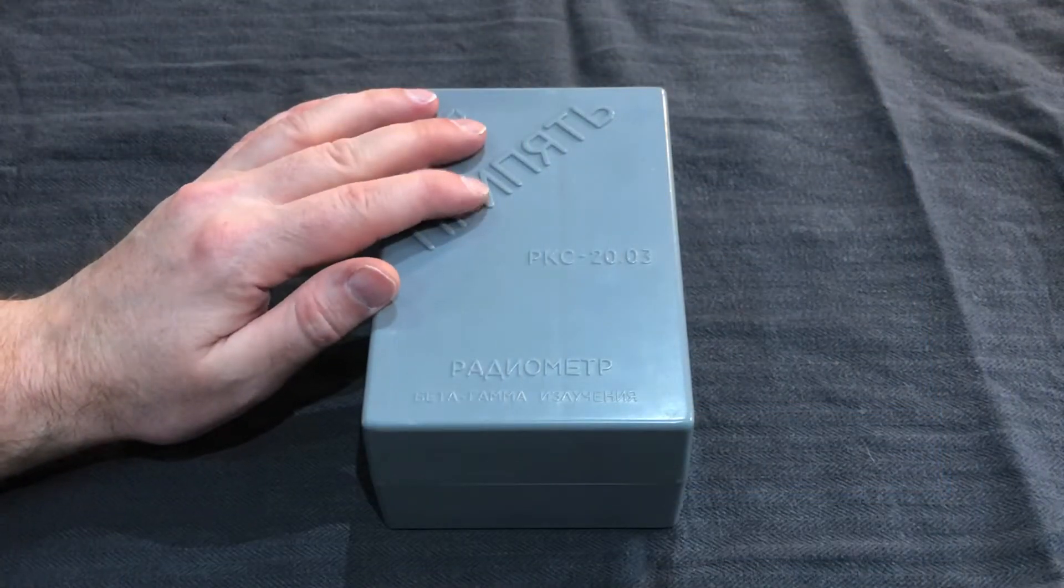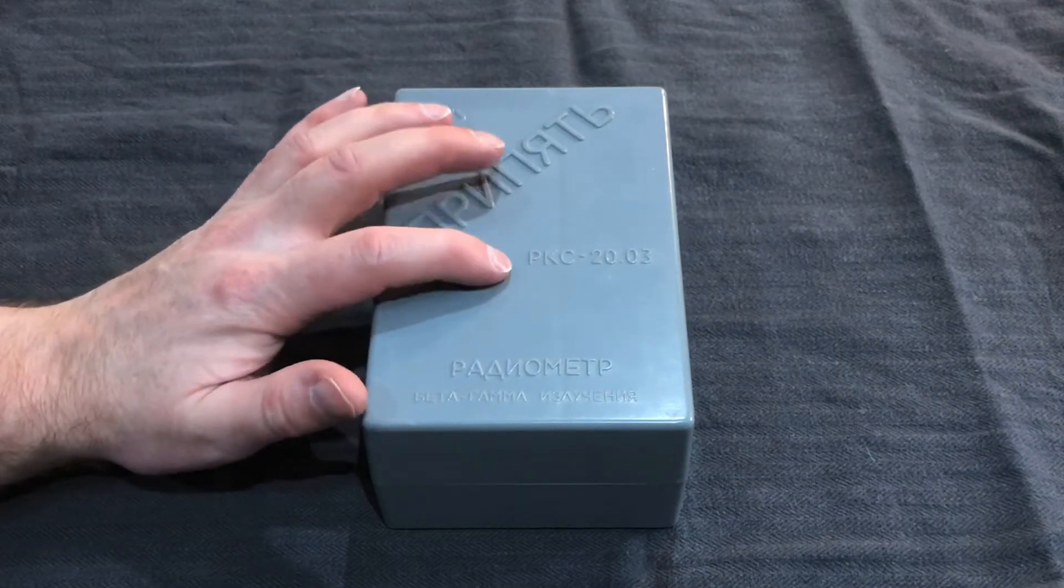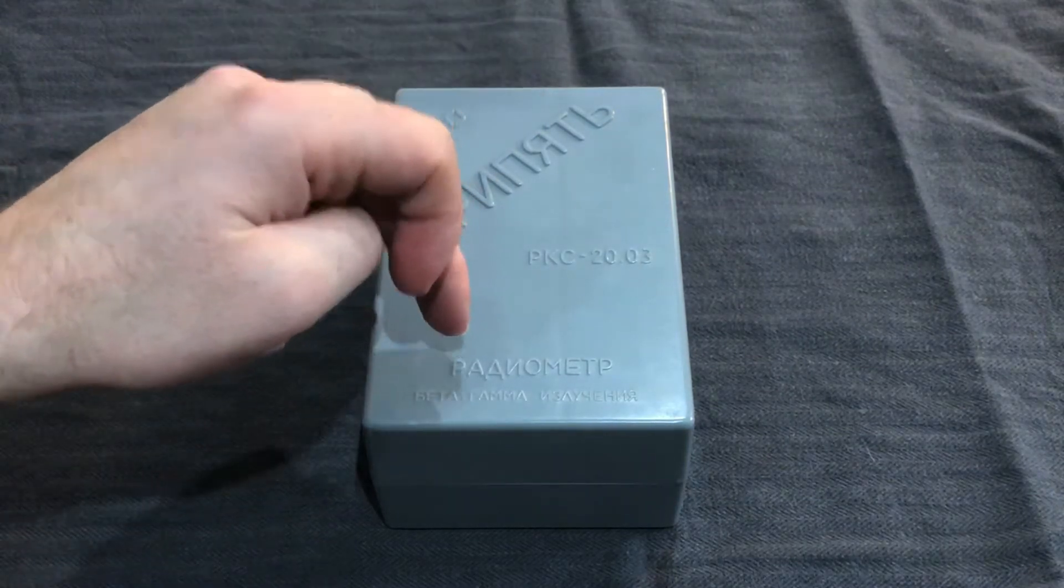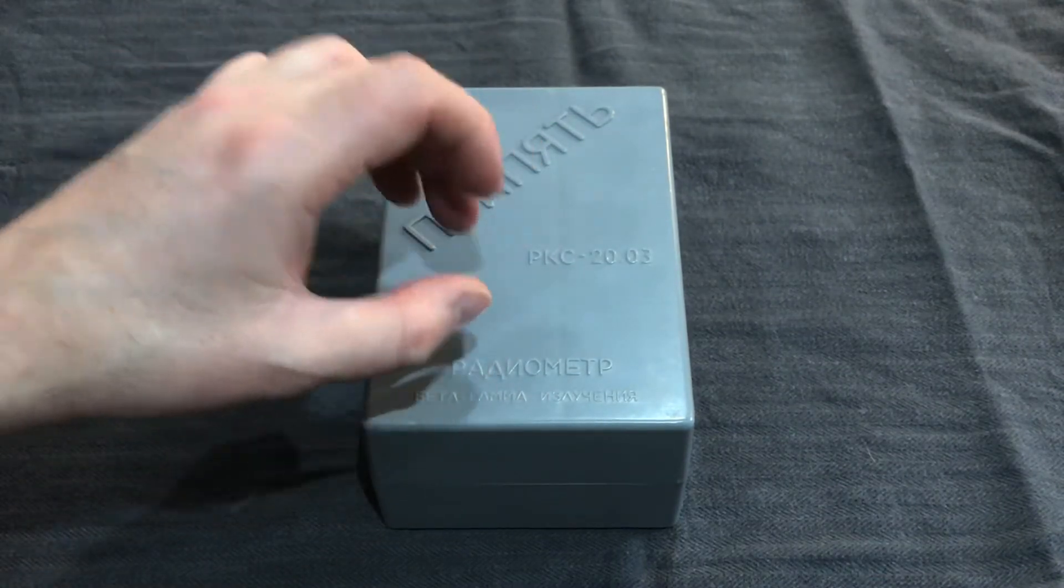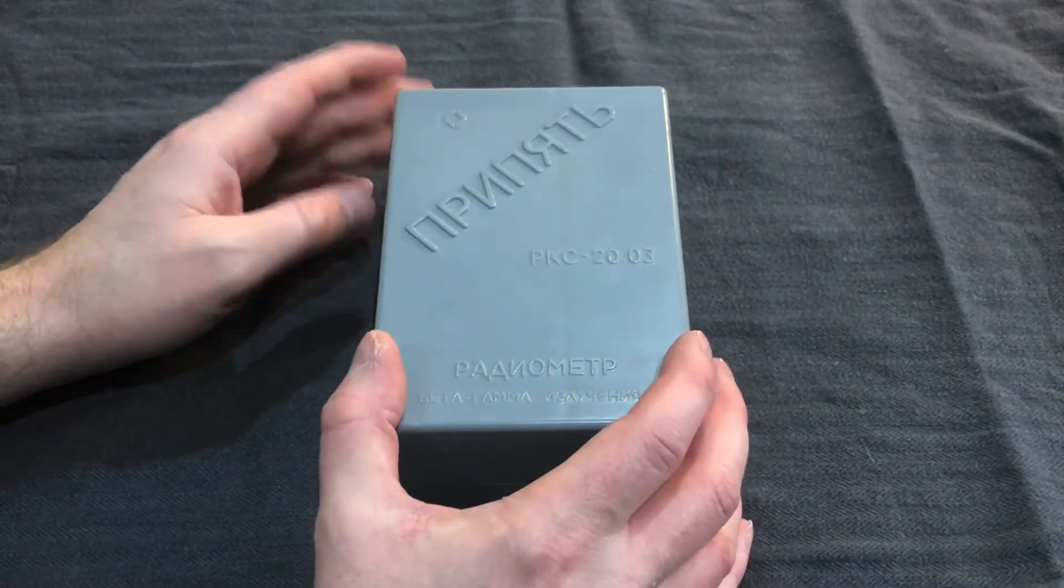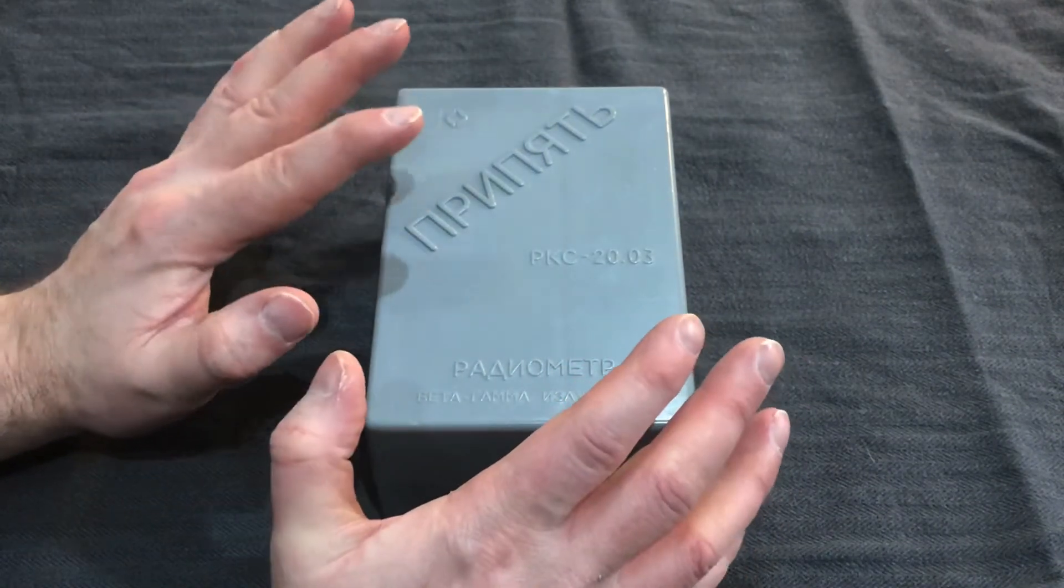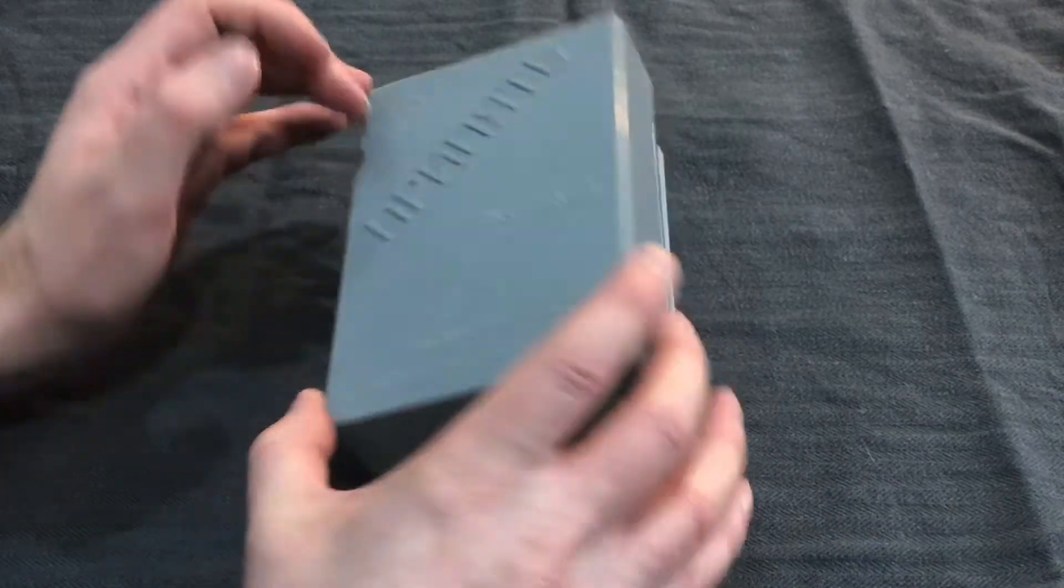Another recent purchase for you. I have a Russian PKC-2003 Pripyat radiometer. It's a Beta and Gamma Geiger counter. Manufactured just after the Chernobyl disaster for members of the public to take their own background radiation readings and also food contamination.